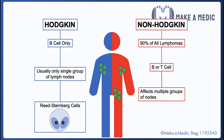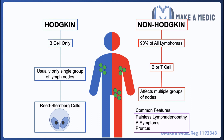There are however some major common features between Hodgkin and non-Hodgkin lymphoma. That includes painless lymphadenopathy, which may be the way that many patients present. They can also cause B symptoms, which are fever, weight loss, and night sweats — typically associated with the worst prognosis in lymphoma. And finally, they can also cause generalized itching or pruritus.